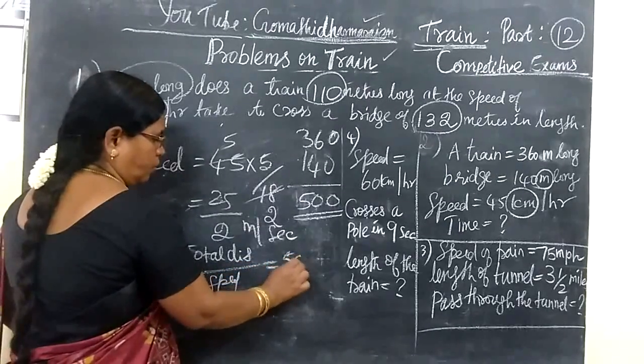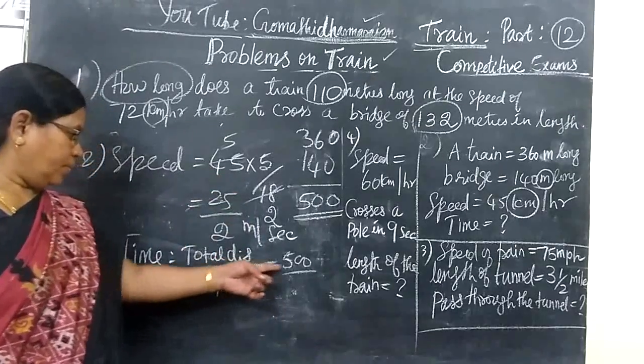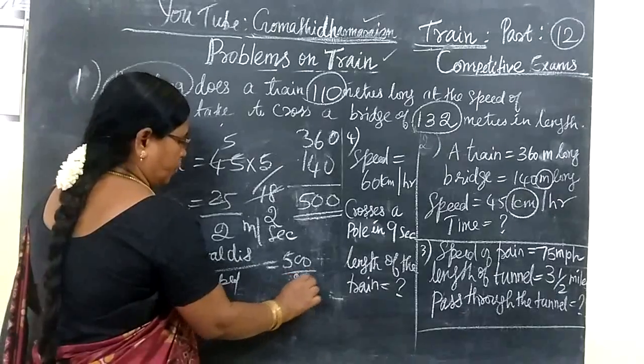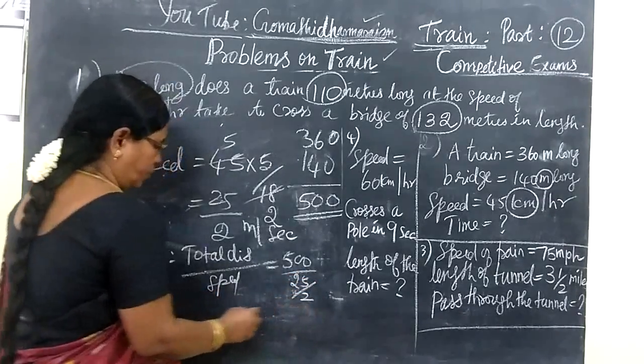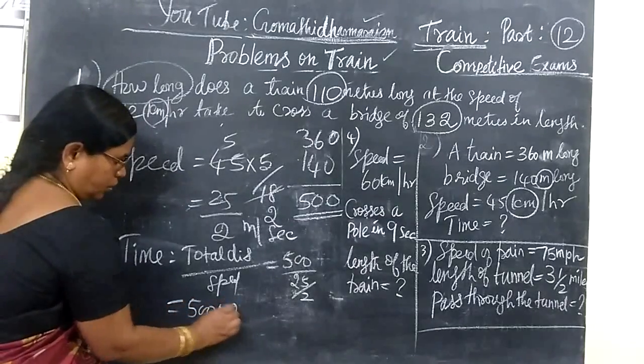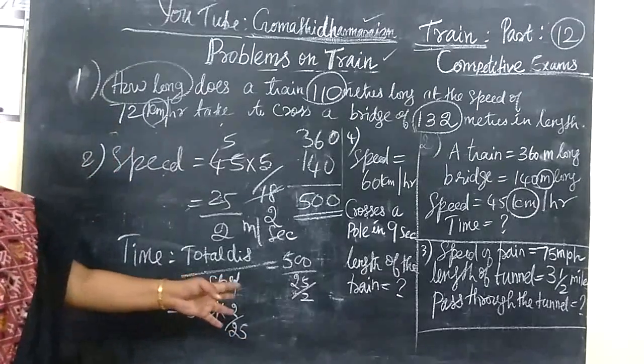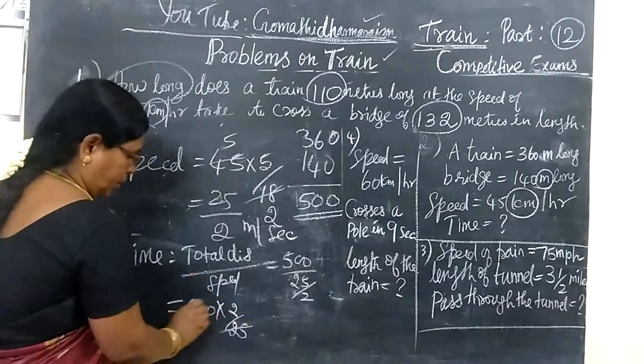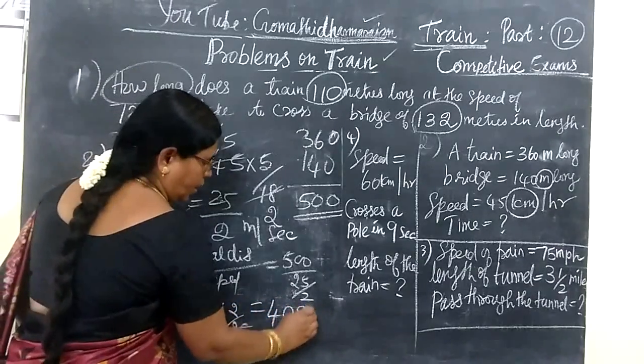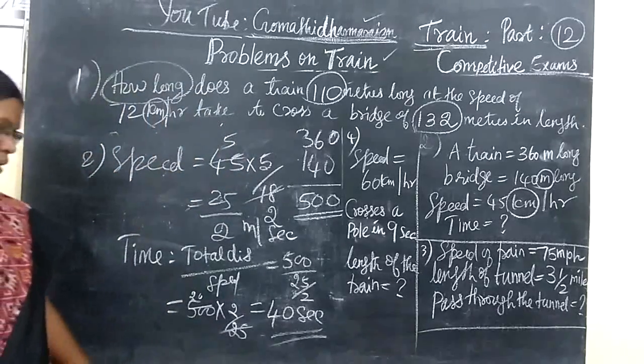And you want to find the time taken to cross the bridge. Time equals total distance by speed. Time equals distance by speed. So this is equal to total distance 500. Speed is 25 by 2. So 500 into 2 by 25. You write reciprocal. So if you cancel, you are getting 40 seconds. Time taken by the train to cross the bridge is equal to 40 seconds.